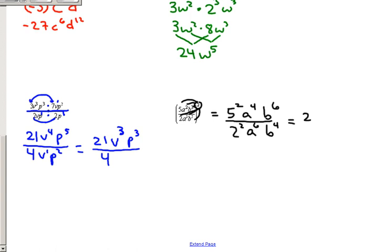So, we can go a little bit further here, 25, a to the fourth, b to the sixth, over 4, a to the sixth, b to the fourth. This is where subtracting and dividing with the exponents gets a little bit tricky, because what happens when you have a bigger one on bottom?